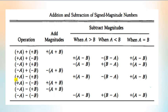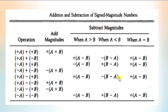In the subtraction case where two numbers have the same sign — plus A minus plus B — we perform subtract magnitudes. When A is greater than B, subtract B from A and put a plus sign in the result. When A is less than B, compute B minus A and put a minus sign. When A equals B, A minus B equals zero, so we put a plus sign here.